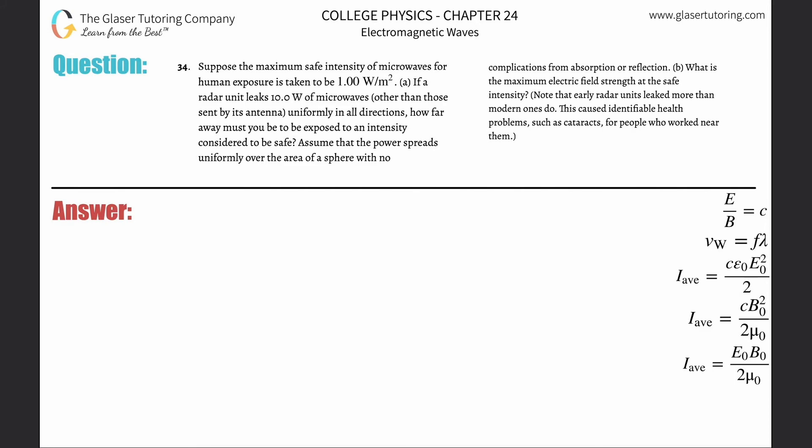Number 34. Suppose the maximum safe intensity of microwaves for human exposure is taken to be one watt per square meter. If a radar unit leaks 10 watts of microwaves uniformly in all directions, how far away must you be to be exposed to an intensity considered to be safe? So the intensity should not exceed one watt per square meter.